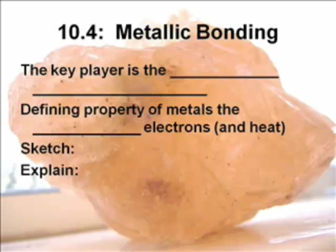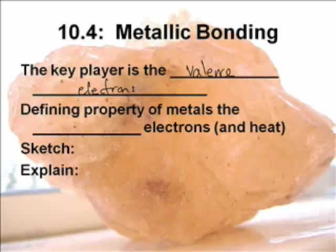Metallic bonding — what's the key player? The electrons. Valence electrons. Have you realized this kind of pattern, ladies and gentlemen, that all bonding is a result of electrons? It's electrons, and then the size makes a role as well.